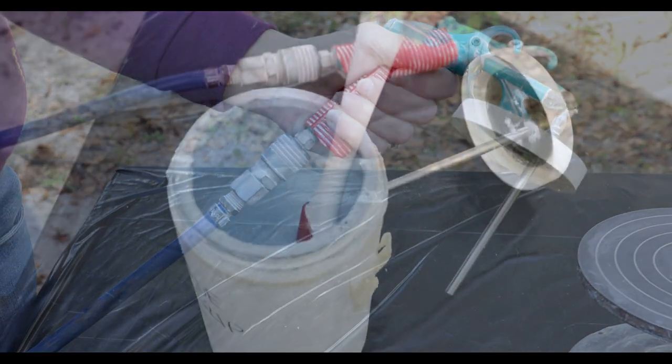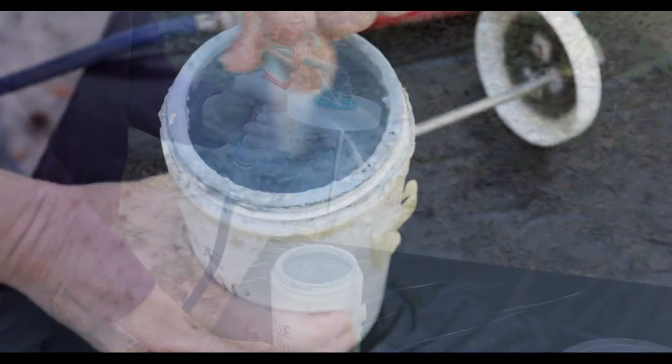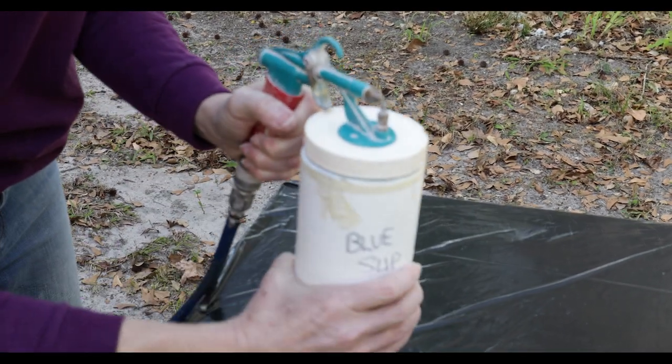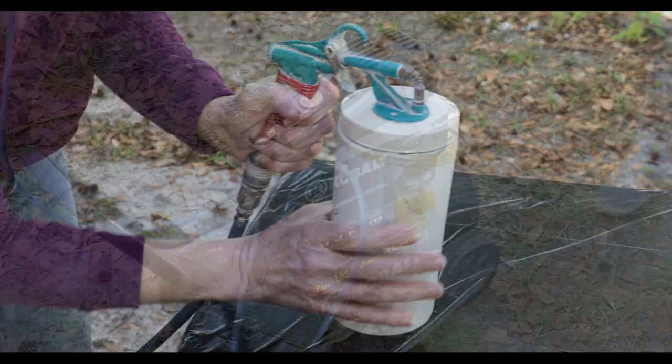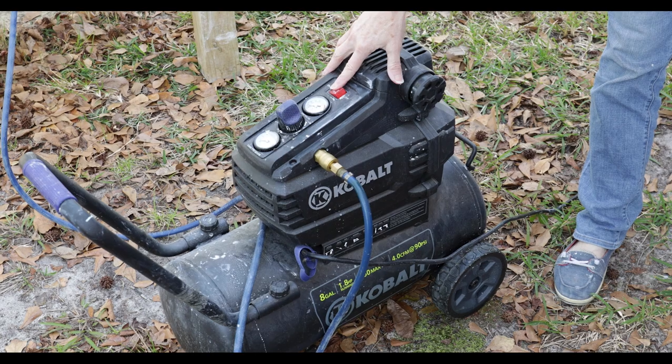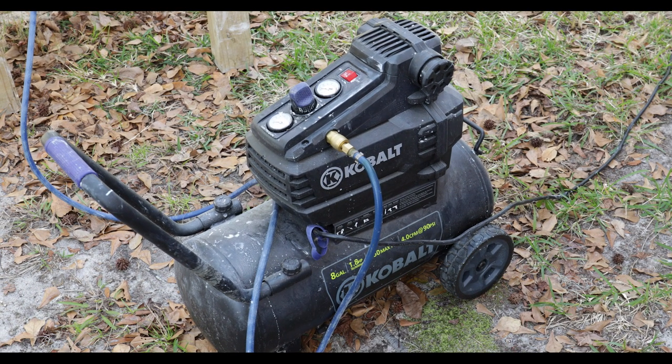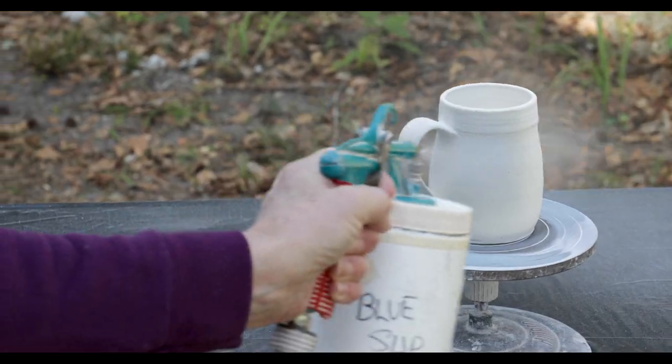I slake down my porcelain clay by adding water until it's a buttermilk consistency plus my choice of mason stain to create a nice slip. Stir it up really good and then simply screw the container to the top. Turn on the compressor and let the tank fill up with air. The compressor will automatically shut off when the tank is full and then you're ready to spray.